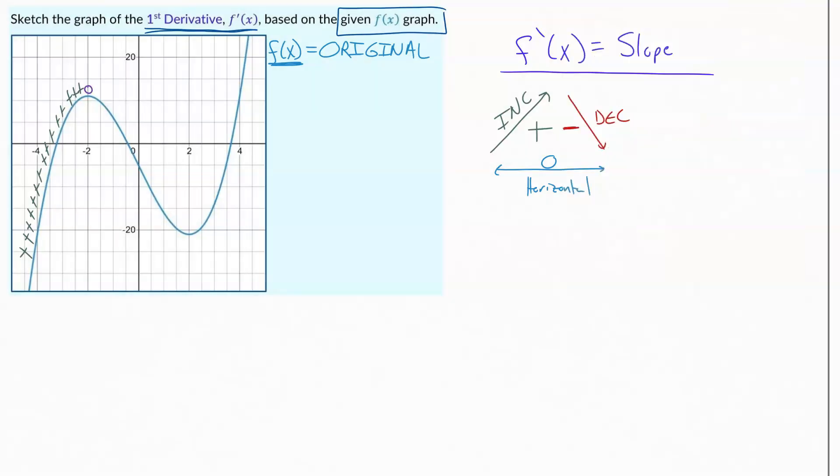And then after that, the graph is headed down. It's going down. So the slope is negative, negative, negative, negative, negative.